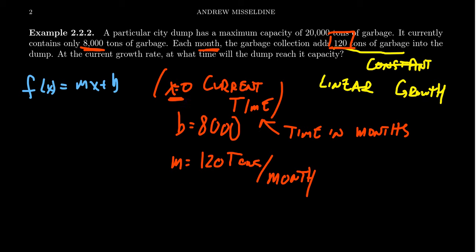And so then our function would look like f(x) = 120x + 8,000. This gives us the model. This is the model. This is the toy we can now use to make predictions.